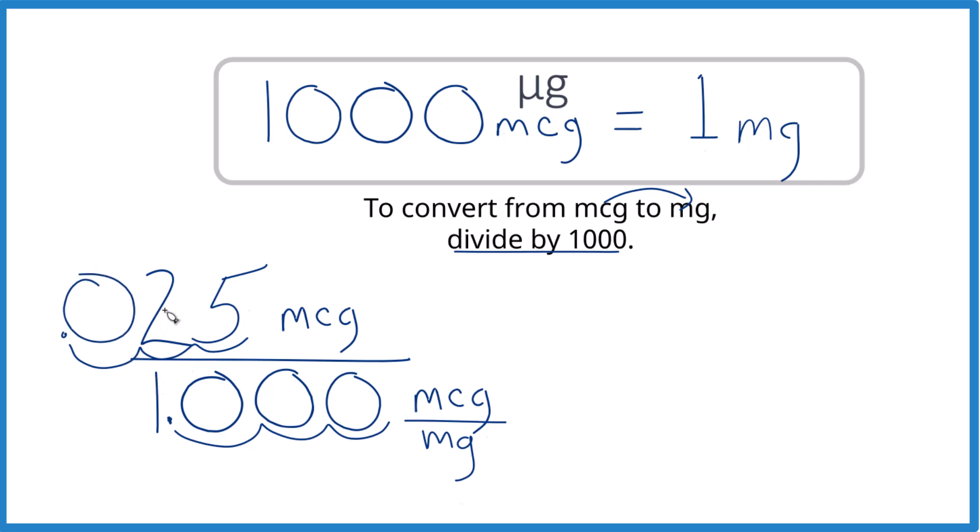So when we convert 25 micrograms to milligrams, we end up with 0.025. Since we have micrograms on the top and the bottom, they cancel out, giving us milligrams. That's what we're looking for.